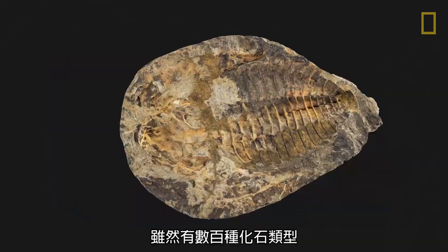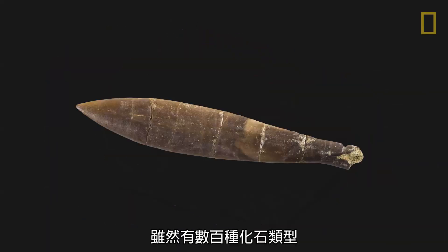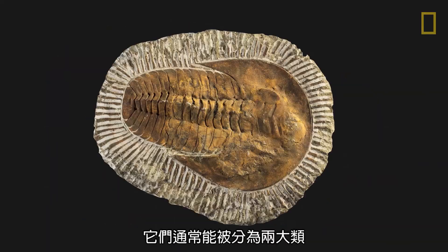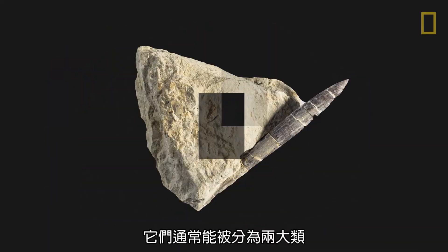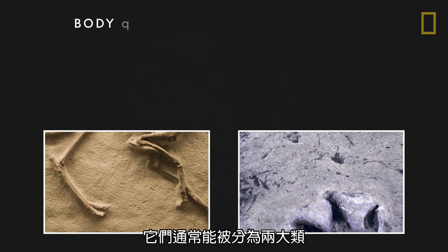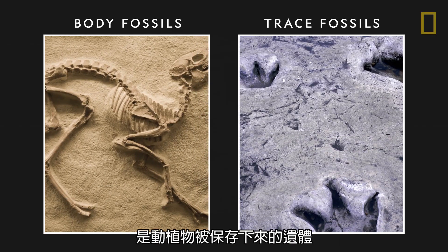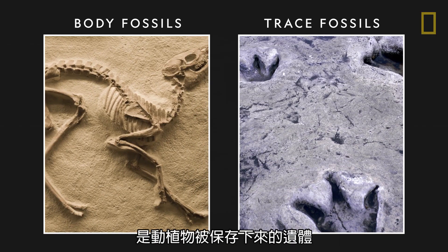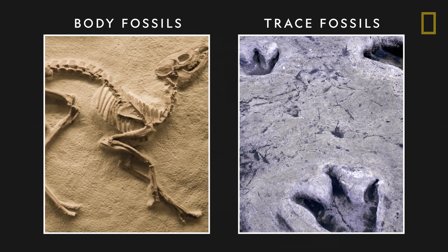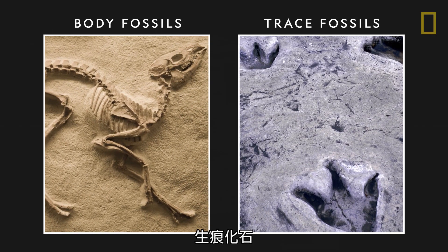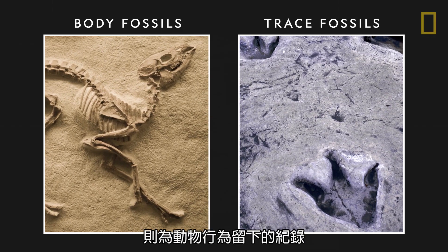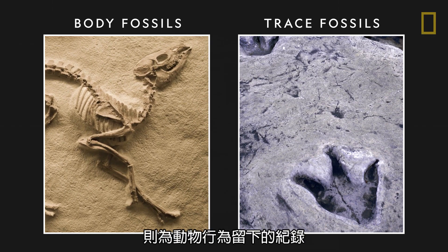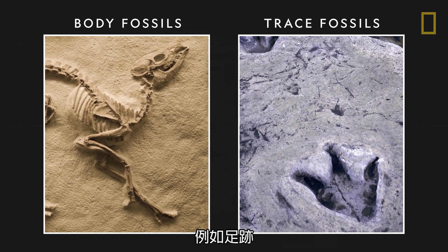While there are hundreds of fossil types, they are often grouped into two major categories: body fossils, which are the preserved remains of plants and animals, and trace fossils, which are records of an animal's behavior, such as footprints.